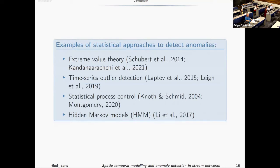Looking at the anomaly detection literature, there are many methods. There is work using extreme value theory, which is a really exciting area. There is work on time series outlier detection. There is also work on statistical process control. More recently, some work has been done using hidden Markov models, which I will explain later.